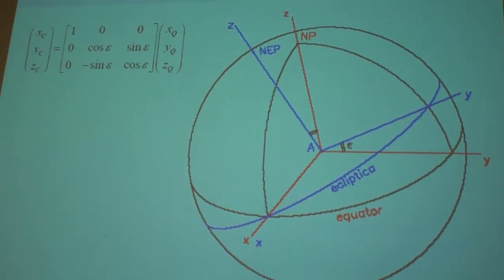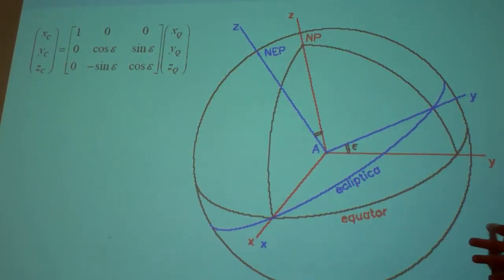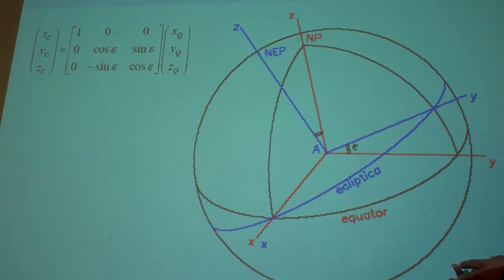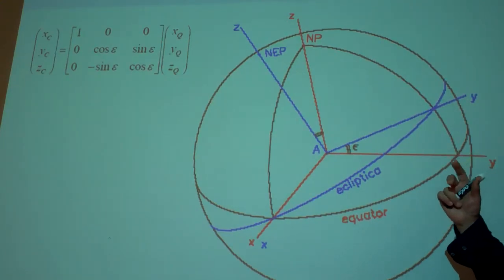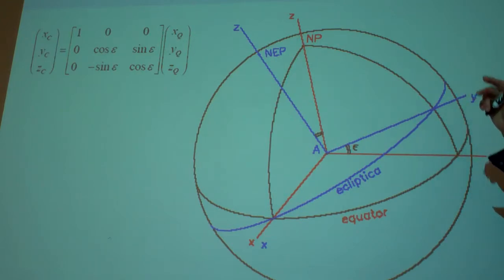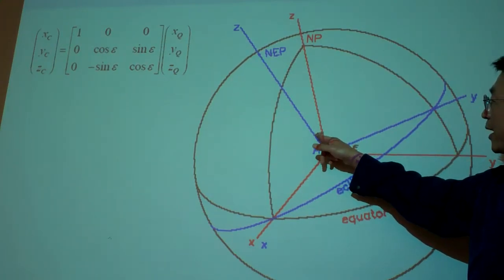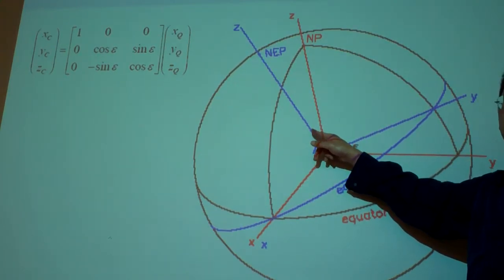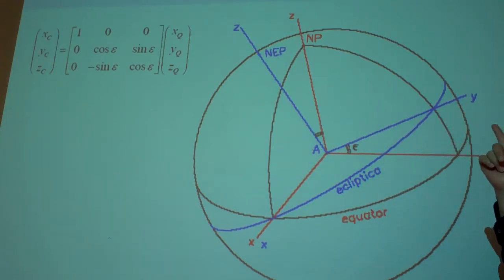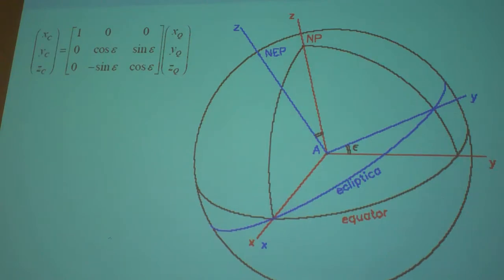This is a comparison: if we overlap the coordinate origins of the Earth-based system and the Sun-based heliocentric system, they are tilted by 23.5 degrees — defined by the tilt of the rotation axis of the Earth. The angle is 23.5 degrees.